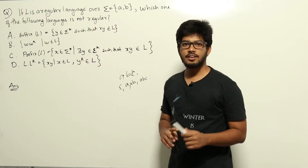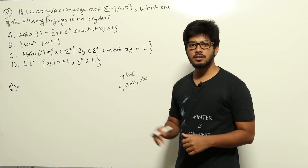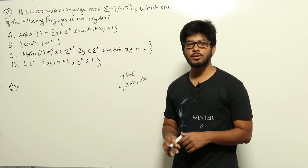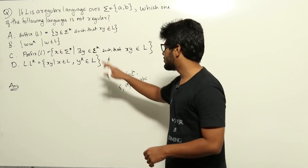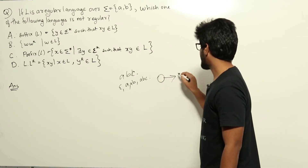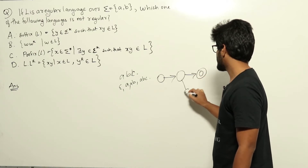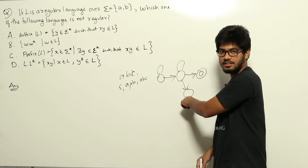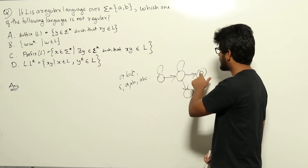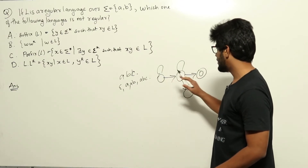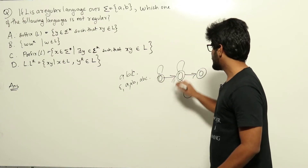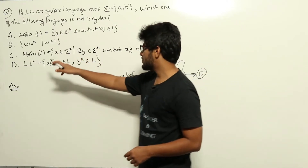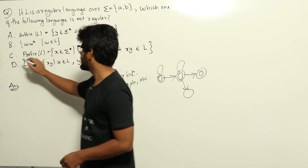This language is regular. If L is a regular language, it will have a deterministic finite automaton. In that DFA, for all states that can reach an accepting state, if we make those states also accepting, we get the prefix language. For example, in a DFA with a dead state, if from certain states we can reach the accepting state, making those states accepting as well gives us prefix of L. So prefix of L is a regular language.